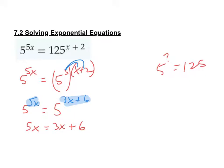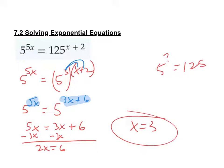What's the first move to solve this equation? We have 5x equals 3x plus 6. Subtract 3x from both sides to get 2x equals 6, so x equals 3. Once you get the bases equal to each other, you eliminate them, set the powers equal, and you don't have to worry about the bases anymore. That's the first half of what we're doing in section 7.2.